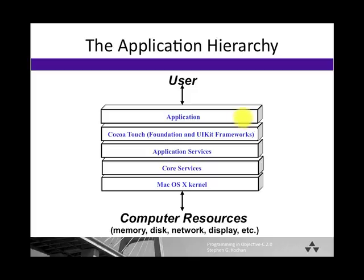Sometimes we skip some of these layers. For example, your application may go down and access code that exists in application services or core services, bypassing some of the intermediate layers, typically either for functionality or expediency.